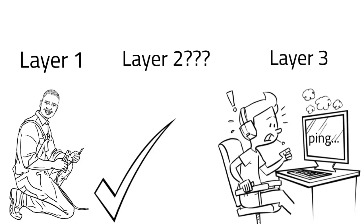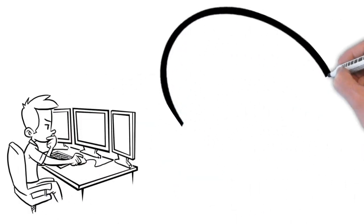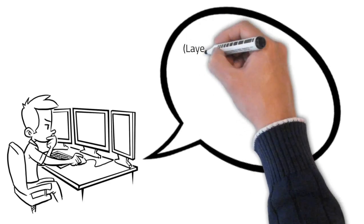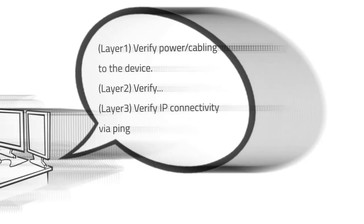Here's a real example: working the help desk and getting a call that a device has no network connection. My first step is to check the physical layer — power, cabling, etc. If all that's good, I'll try to ping the device using its IP address. But you can't just jump to layer 3 and ping something without checking layer 2 first. So what tool or option can you use to verify the health of layer 2?